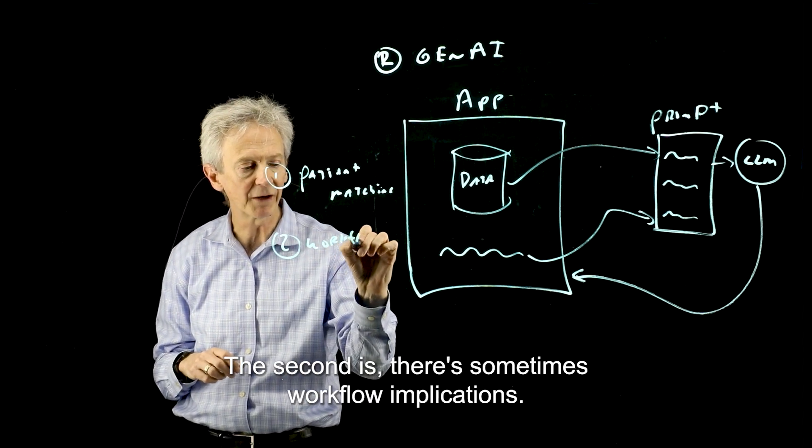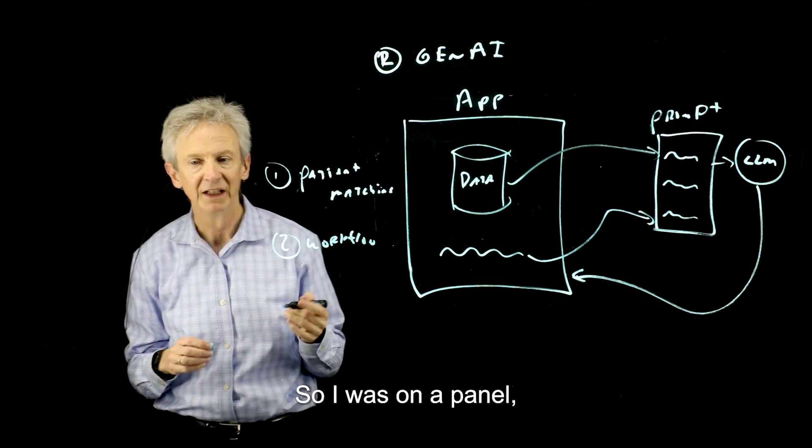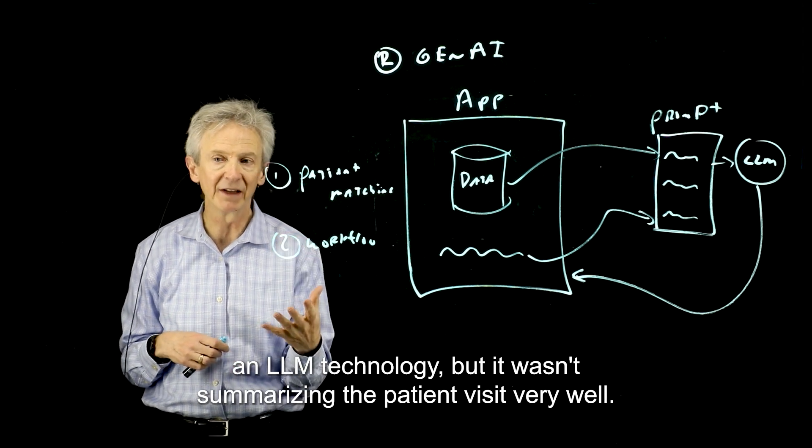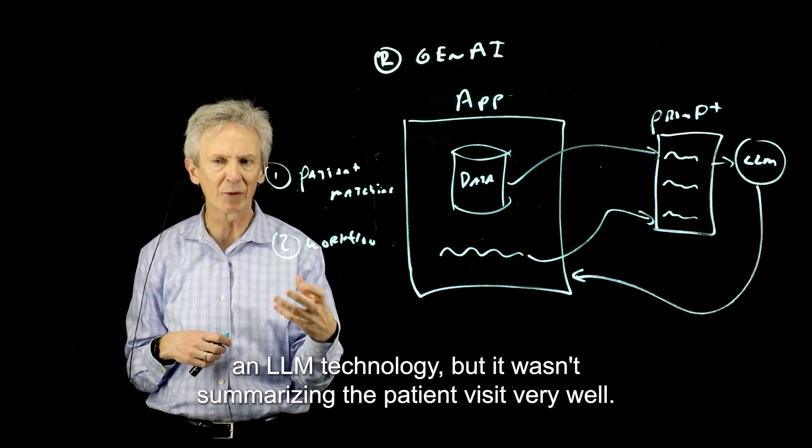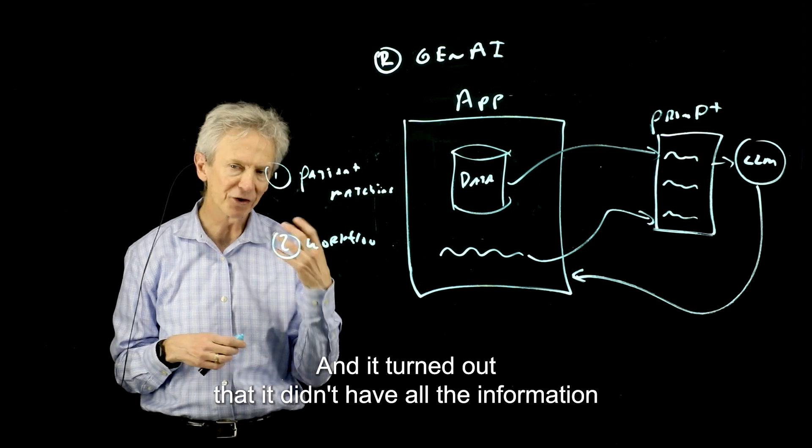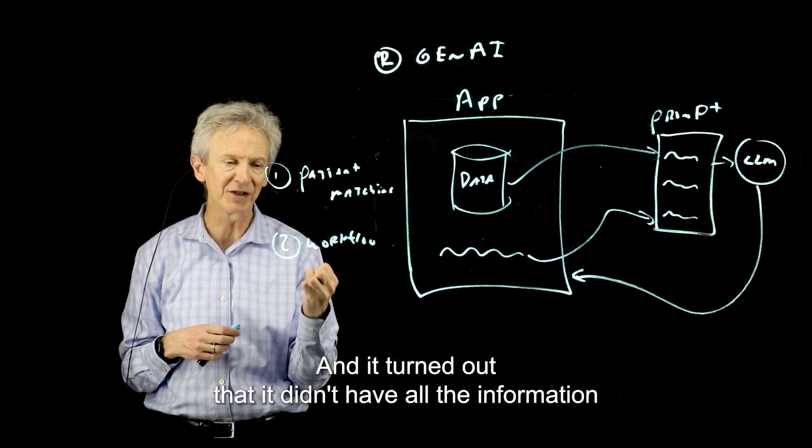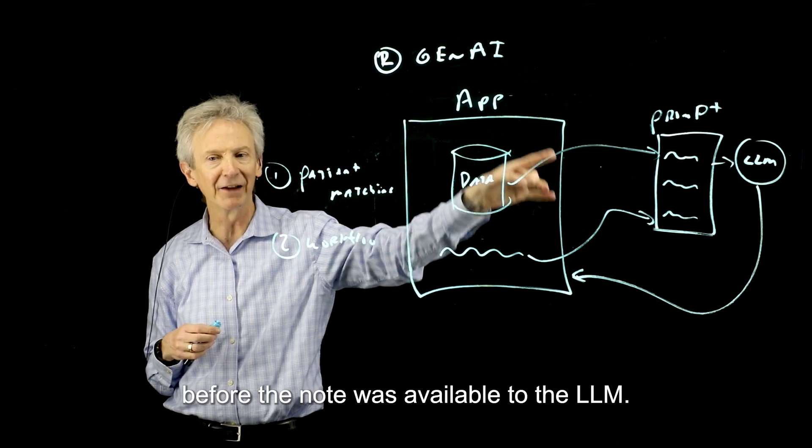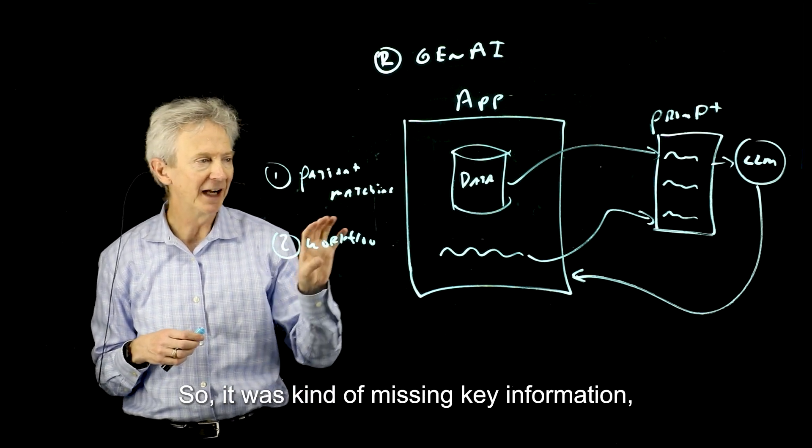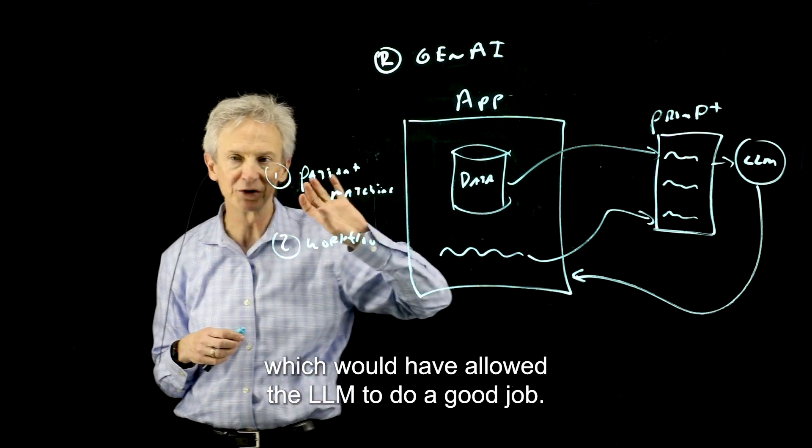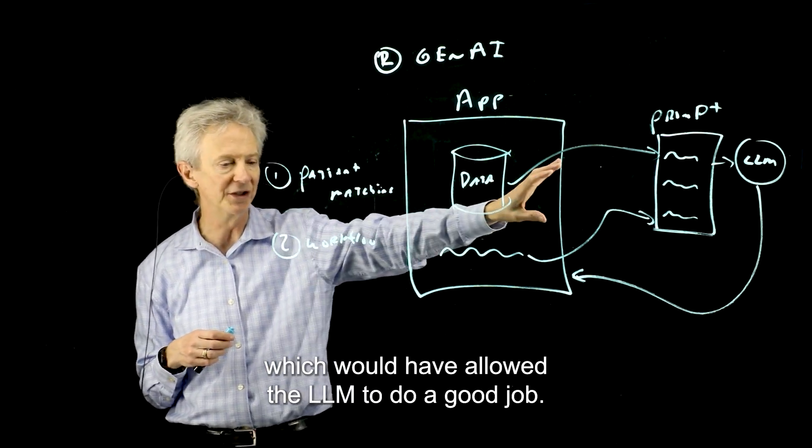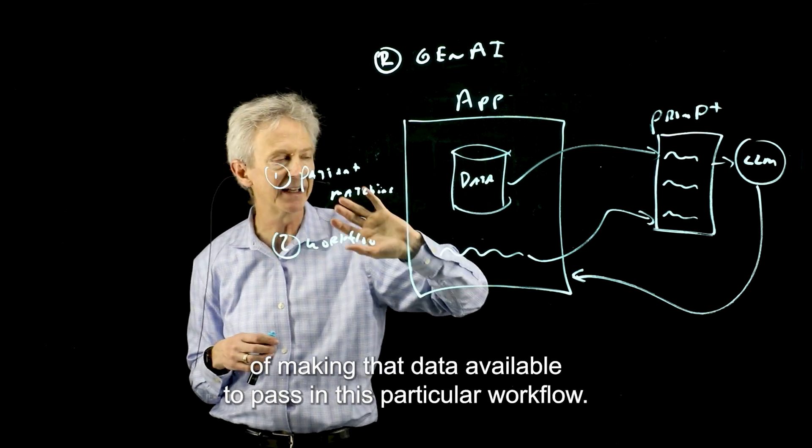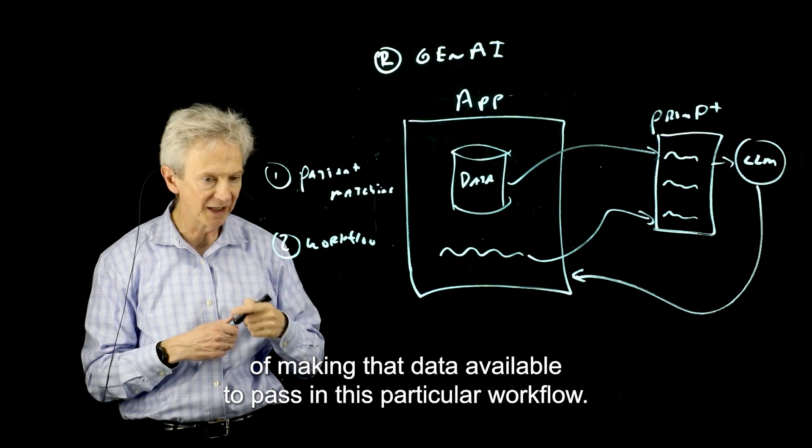One is you need to think about your patient matching strategy. If you want to present a comprehensive chart to the LLM, then you have to bring the data together through all the sources from that chart. The second, there's sometimes workflow implications. I was on a panel recently and somebody told the story about how they were using an LLM technology, but it wasn't summarizing the patient visit very well. And it turned out that it didn't have all the information because the doctor had to sign the note before the note was available to the LLM. So it was missing key information which would have allowed the LLM to do a good job.